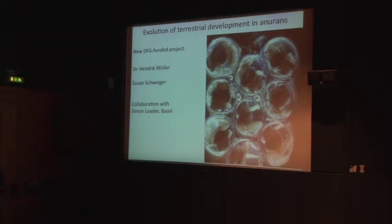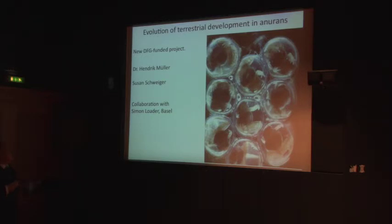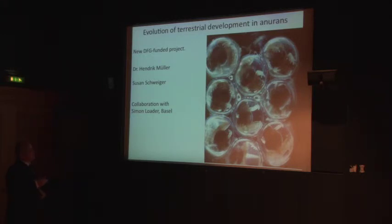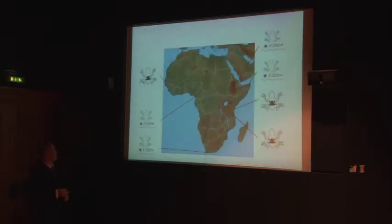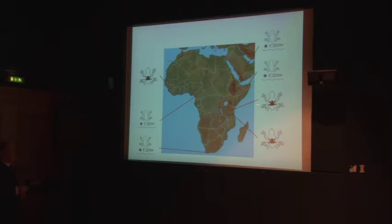The evolution of terrestrial development in neurons in Africa is studied by Henrik Müller, assistant, and Susan Schweiger, a graduate student in the group, in collaboration with people in Switzerland and Basel. The tendency to get rid of dependence on water for reproduction has evolved many times in frogs. When you have a direct-developing frog, it looks like this — it's not a larva, it's a frog, and it soon hatches. Both direct development and viviparity have evolved a few times in East Africa and West Africa. They do field work and lab work combined.